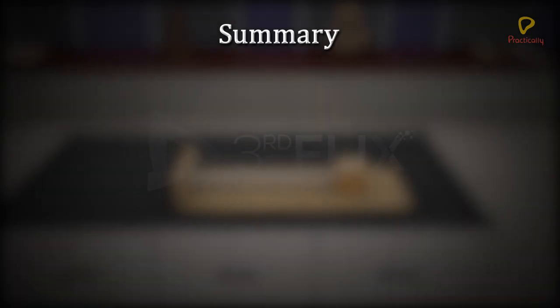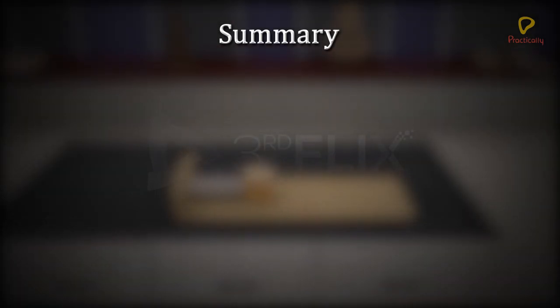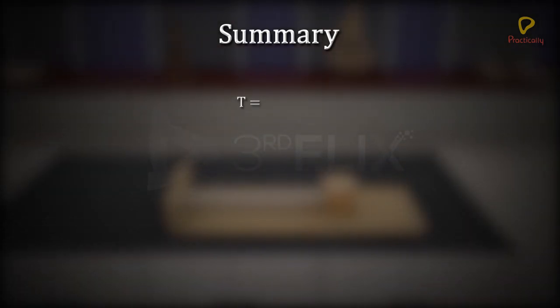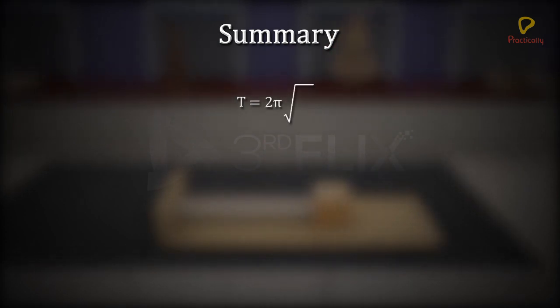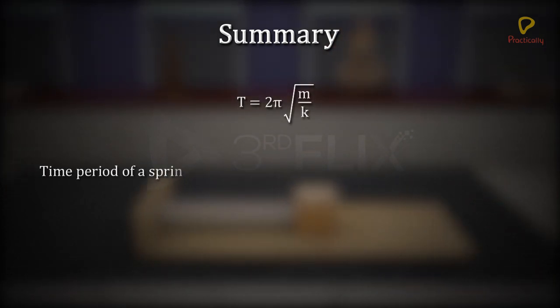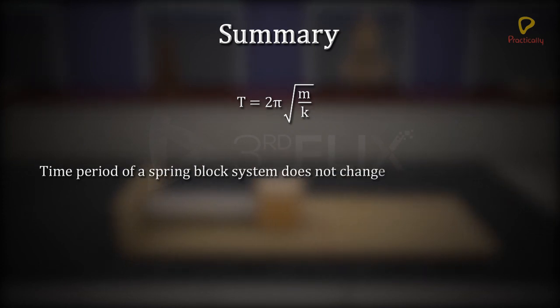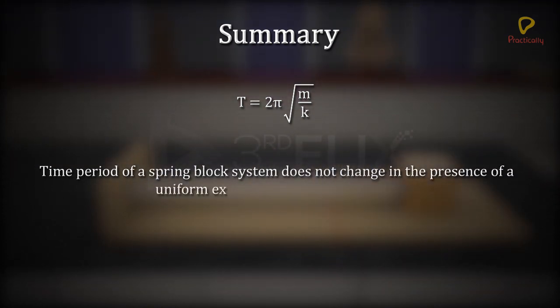Summary: Time period of a spring block system, t, is equal to 2 pi root over m by k. Time period of a spring block system does not change in the presence of a uniform external field, such as gravity.